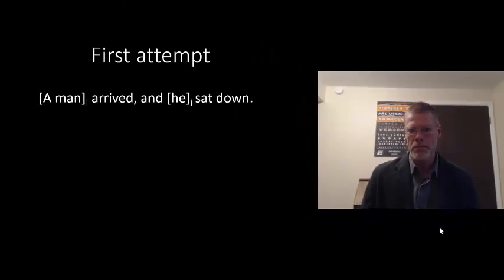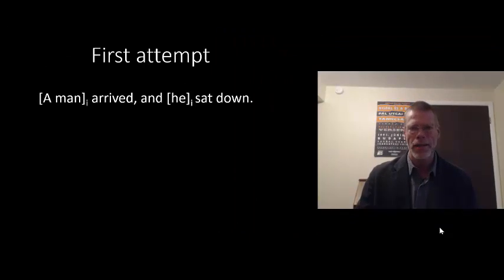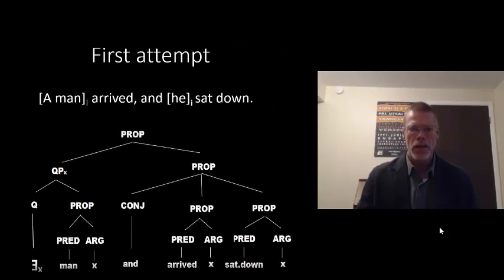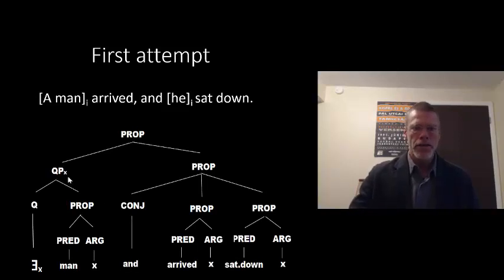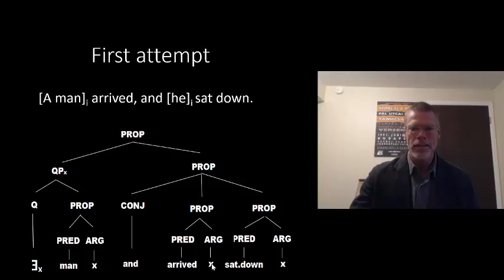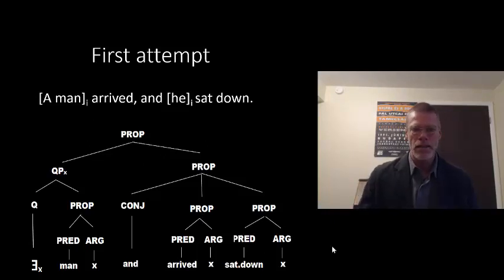So the first attempt. This one is fairly straightforward to deal with in a semantic structure. We've got our propositions, we've got our quantifier phrase over here. This is the existential — it introduces the variable x, which is bound down here and here. We've got a C-command relationship here, so everything is fine in this sentence.